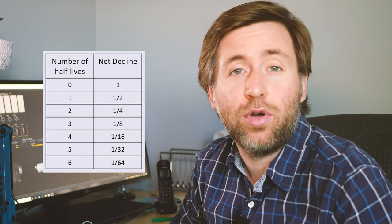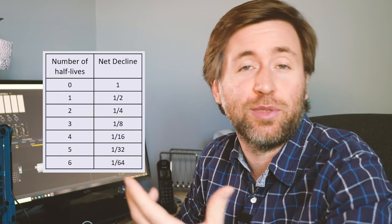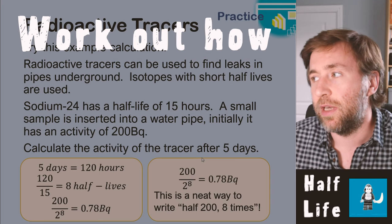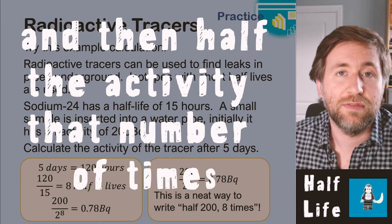The idea of net decline is useful: instead of dealing with actual numbers of nuclei, express what fraction remains. After one half-life: one half. After two: one quarter. After three: one eighth. After four: one sixteenth. This is 1 over 2 to the power of the number of half-lives passed. For any calculation, work out how many half-lives have passed and halve the starting value that many times.